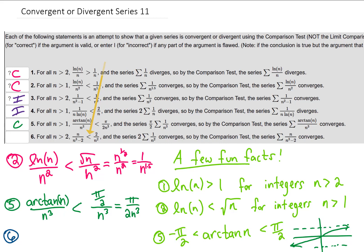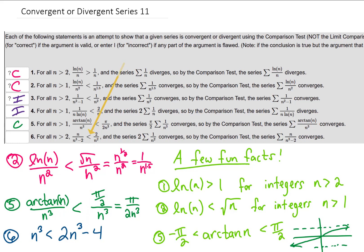What I might do to see if this is a true statement is multiply both sides by the two denominators. Multiplying both sides by n squared gives an n cubed, and multiplying both sides by n cubed minus 2 gives 2n cubed minus 4 on the right hand side. It doesn't take much playing around to find that is actually a true statement. So this inequality is true. Now the series on the right side is a convergent p-series with p equals 2. We've successfully argued that our series is less than a convergent series — less than a finite number is another finite number — so our series is convergent as well. This logic is correct.